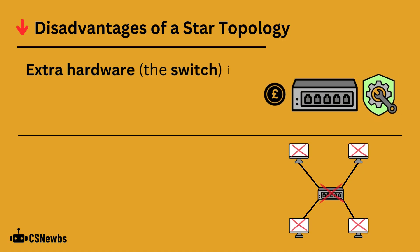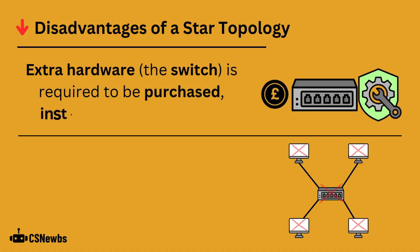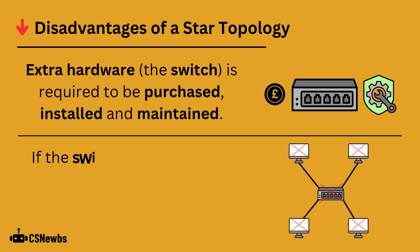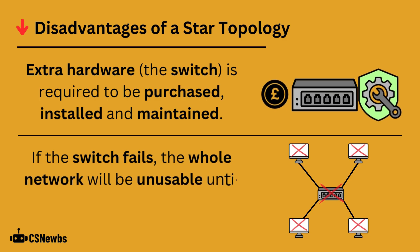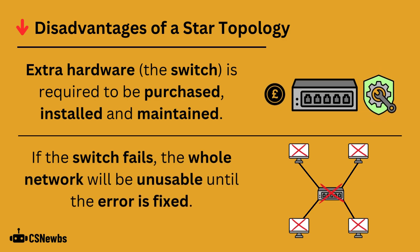Disadvantages of a star topology include that extra hardware, which is the switch, is required to be purchased, installed, and maintained. Also, if the switch fails, the whole network will be unusable until the error is fixed.